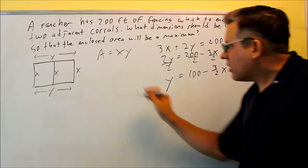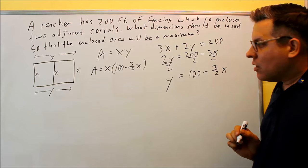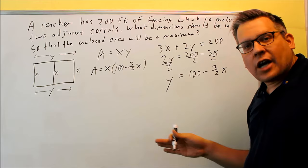I'm going to take this y. I'm going to substitute it back into that y right there. And I'm going to get x times, instead of the y, I'm going to put in this right here, 100 minus three halves x. That's going to be your area formula.